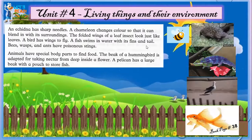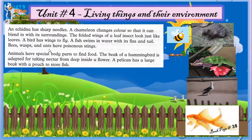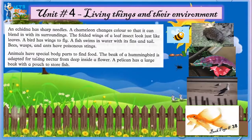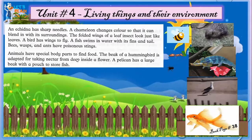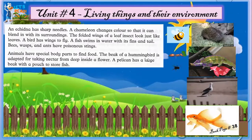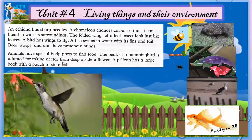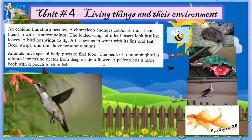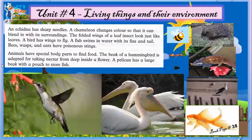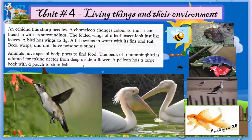Bees, wasps, and ants have poisonous stings. Animals have special body parts to find food. The beak of a hummingbird is adapted for taking nectar from deep inside a flower. A pelican has a large beak with a pouch to store fish.